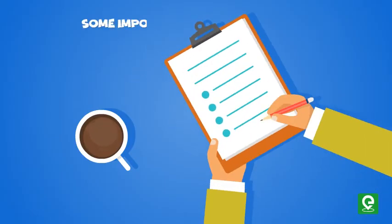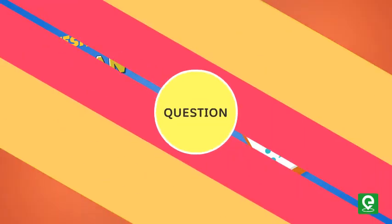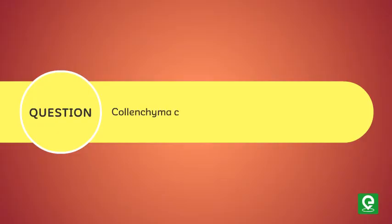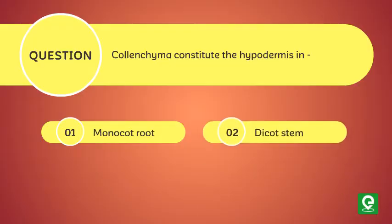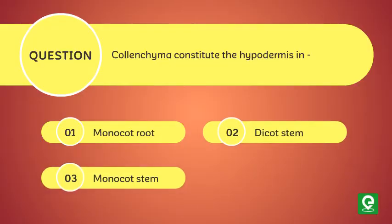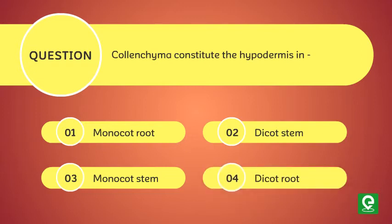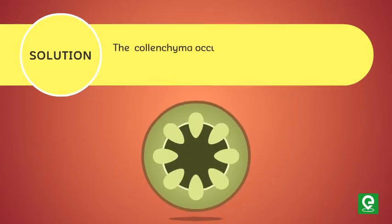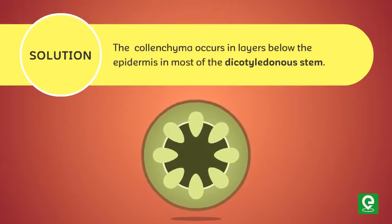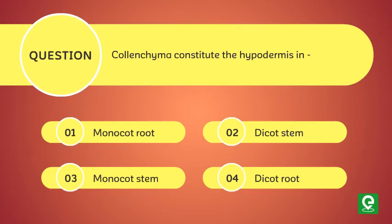Question one: Colenchyma constitutes the hypodermis in — (1) monocot root, (2) dicot stem, (3) monocot stem, or (4) dicot root? This question was asked in AIPMT 2010. Solution: Colenchyma occurs in layers below the epidermis in most dicotyledonous stems. Hence, option two is correct.